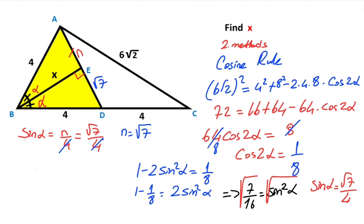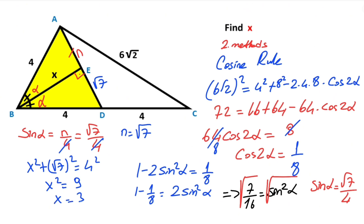Final step: for this triangle, if you apply the Pythagorean theorem, x squared plus (root 7) squared equals 4 squared. Therefore x squared equals 9, so x equals 3 units.